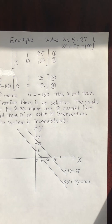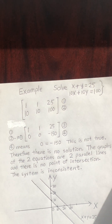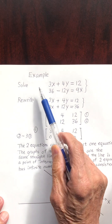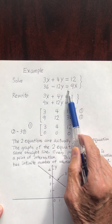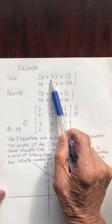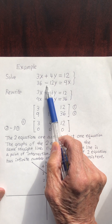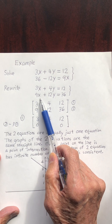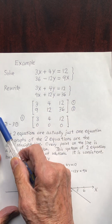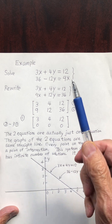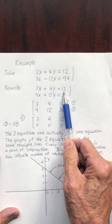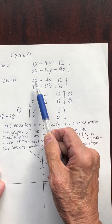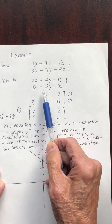Let's have another example. I want to solve this system of equations. I have 3x plus 4y equals 12, and 36 minus 12y equals 9x. I rewrite this by putting x and y on the left-hand side and constants on the right-hand side: 3x plus 4y equals 12, and 9x plus 12y equals 36. The augmented matrix is 3, 4, 12 for row 1 and 9, 12, 36 for row 2.